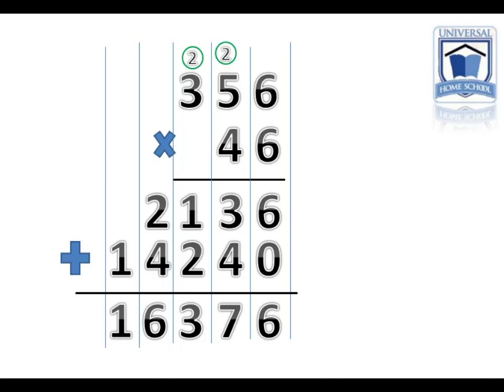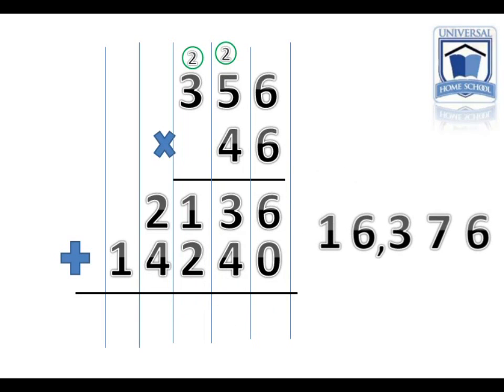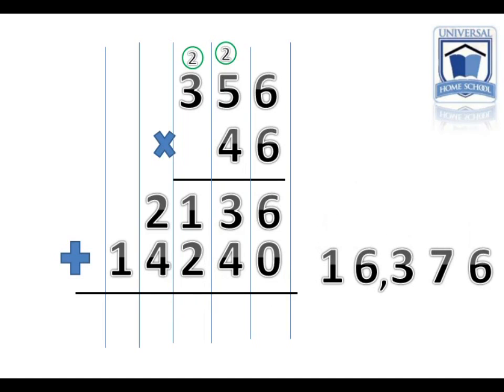And let's count the numbers, three numbers from the right, to put a comma in. 16,376. The answer is 16,376.